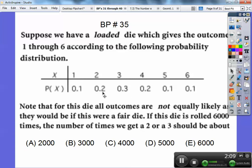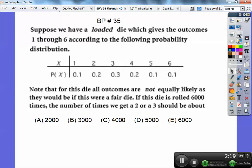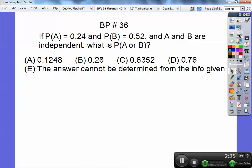Here's the probability of getting a two. Or means addition. So I'm going to add up this probability plus this probability. So it's going to get me a probability of 0.5. So 0.5 of the 6,000 rolls would get me 3,000 rolls. So choice B.